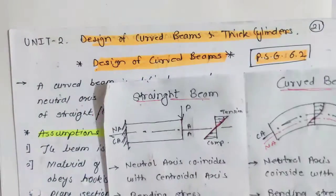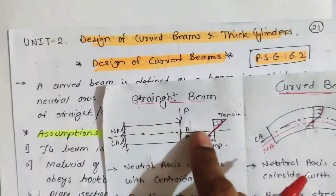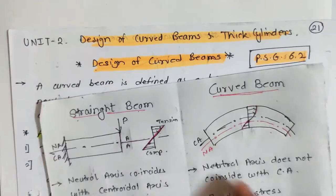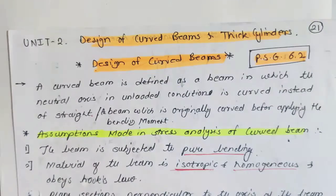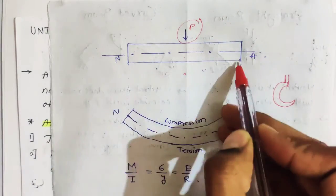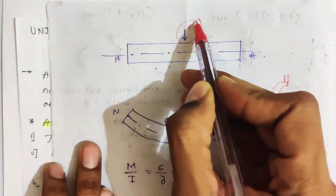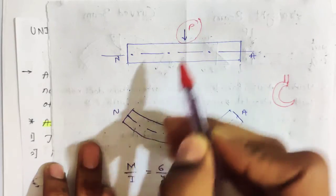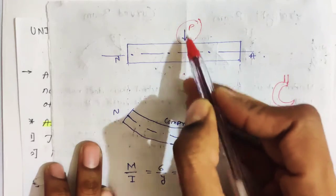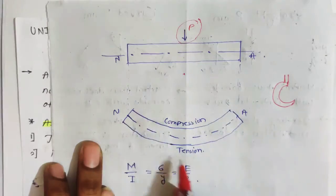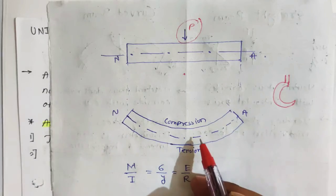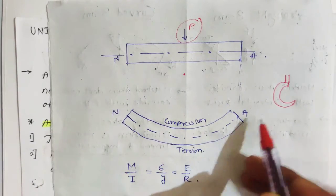If you see a straight beam, the neutral axis is straight before application of load. But after application of load P, the beam bends and the neutral axis becomes curved. However, this curvature occurs after application of load.